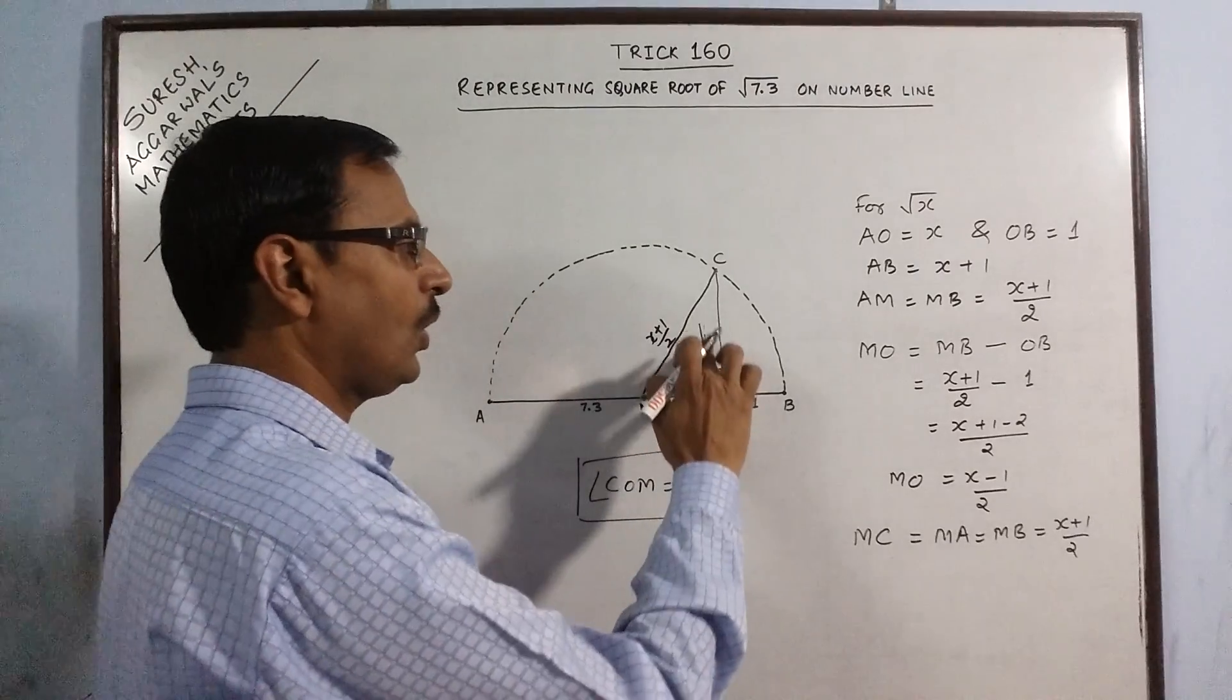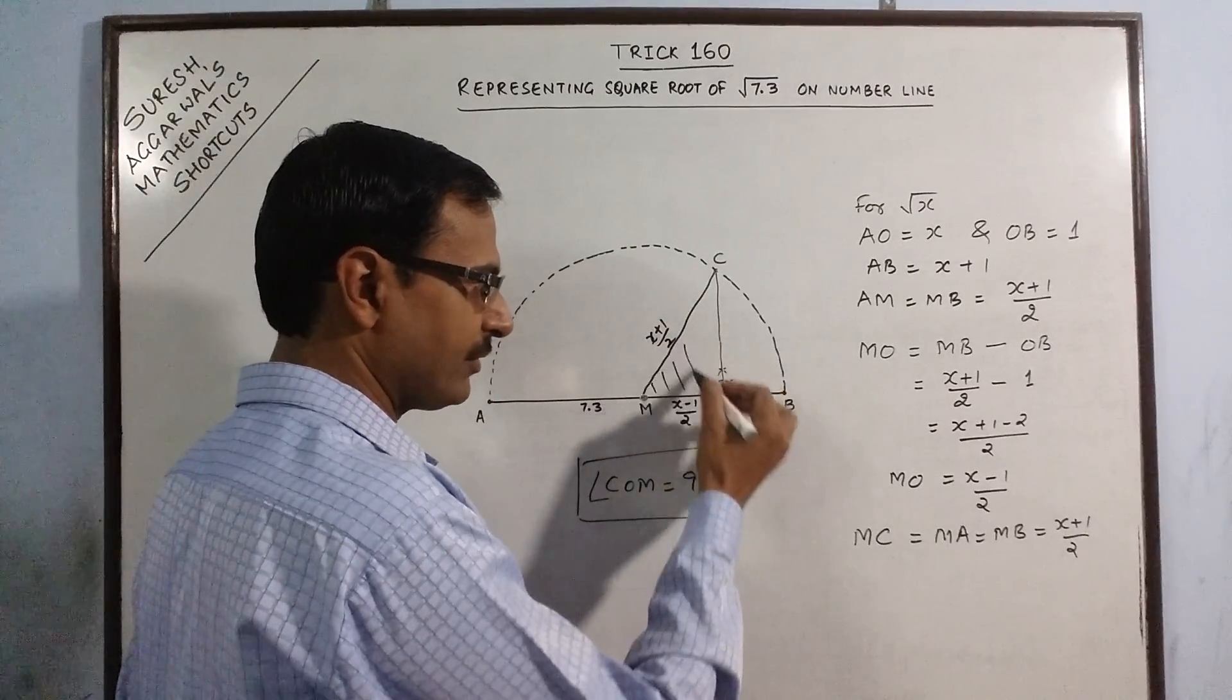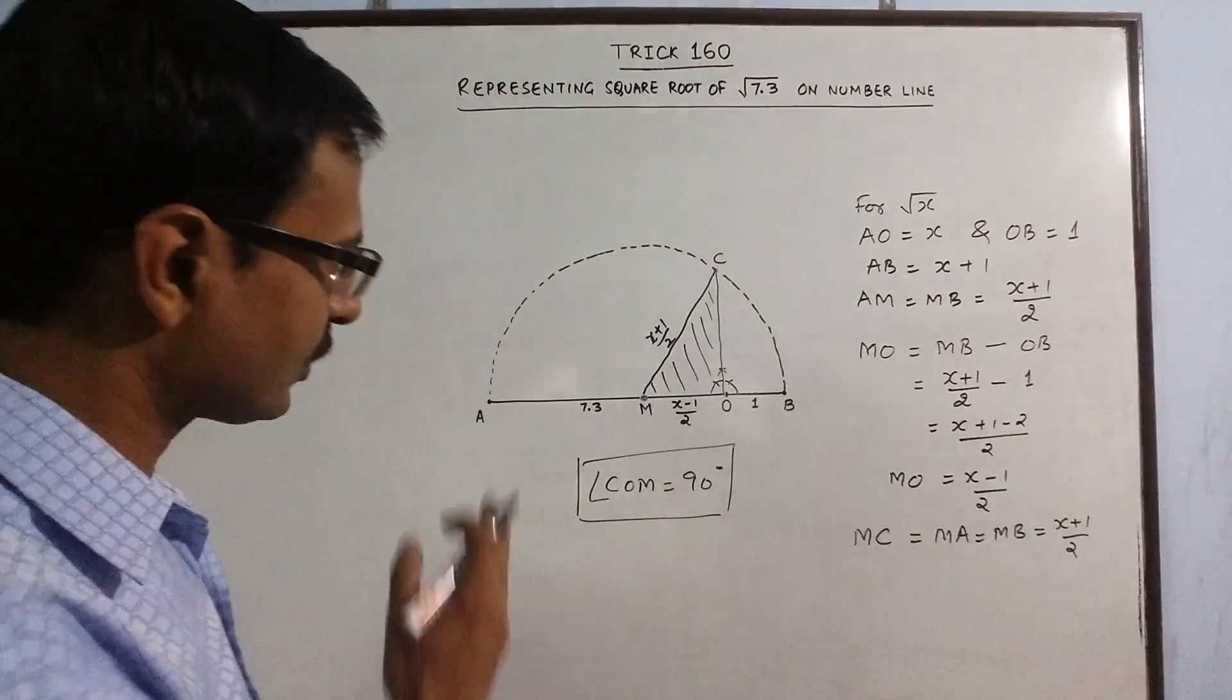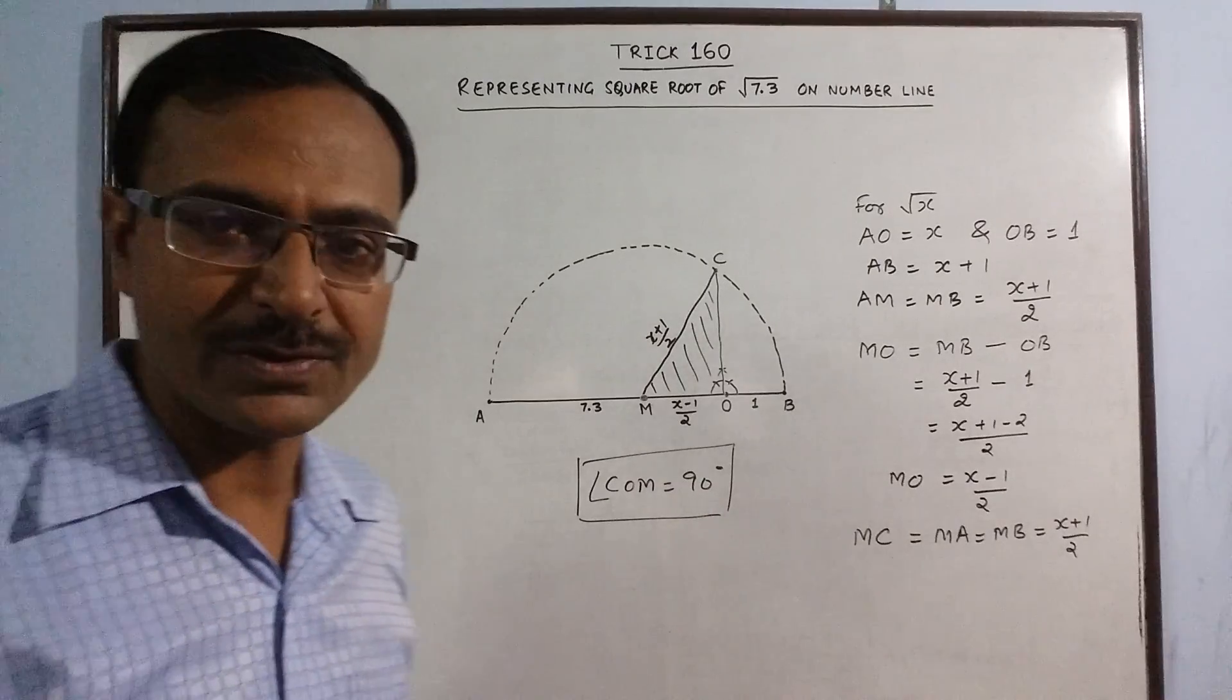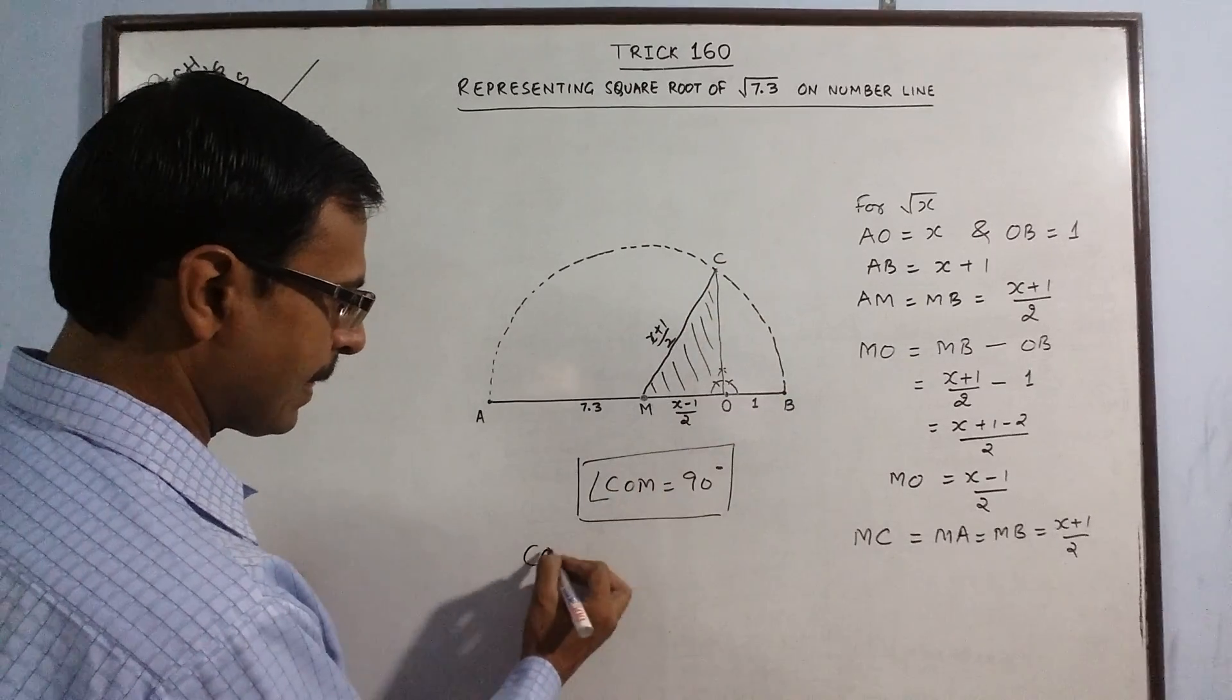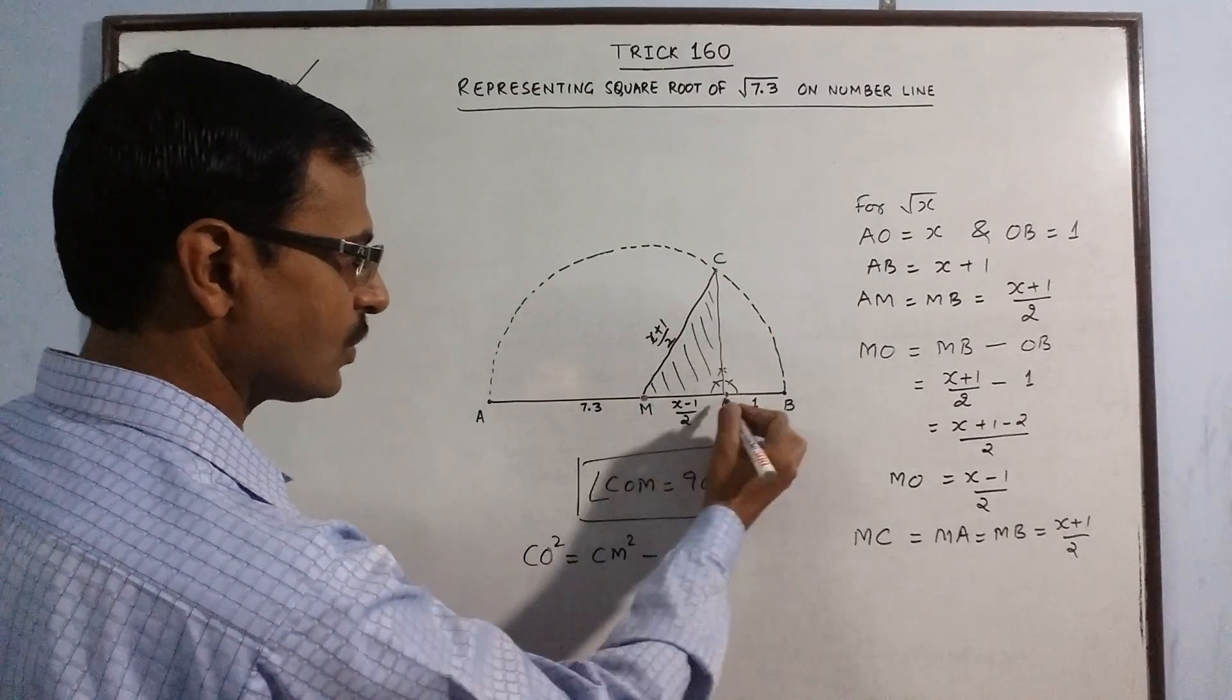Now all three sides of this triangle can be used to apply the Pythagorean theorem and find CO. Let us apply this Pythagorean theorem here. I have CO² as CM² minus OM².